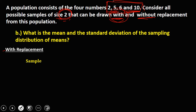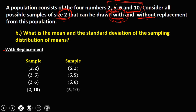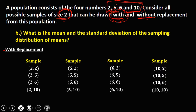Starting with 2: since it's with replacement, we can have (2,2), (2,5), (2,6), and (2,10). For 5: (5,2), (5,5), (5,6), and (5,10). For 6: (6,2), (6,5), (6,6), and (6,10). For 10: (10,2), (10,5), (10,6), and (10,10). These are all 16 samples with replacement.